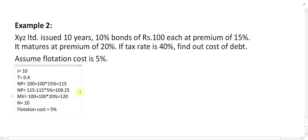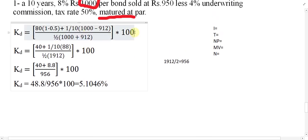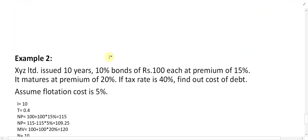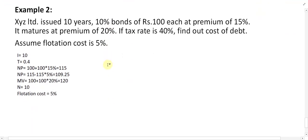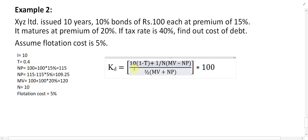Now apply the formula for cost of debt. Copy the formula and put in the values. I is equal to 10. The after-tax interest component is I multiplied by (1 minus T), so 10 multiplied by (1 minus 0.4).